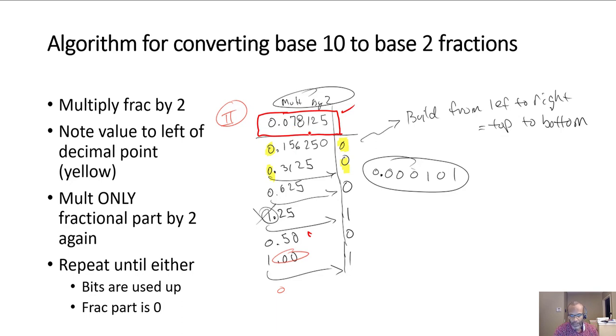When you multiply 0.078125 by 2, you end up with 0.15625. You note the whole number component, and then you bring that over and you save it.